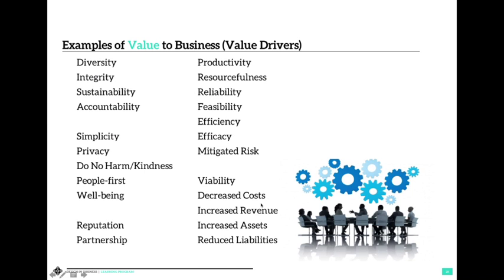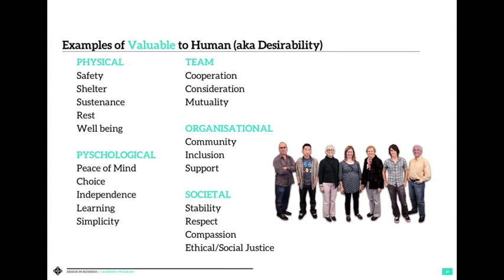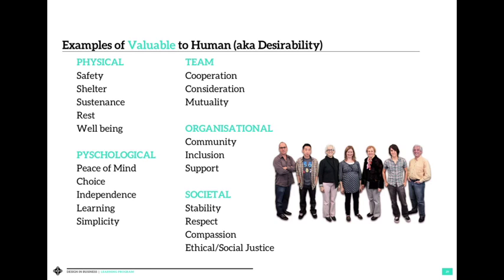I want to touch on the difference between value and valuable. There is a value-to-valuable alignment principle that most organizations should have but sometimes needs to be explicitly stated. Value drivers — how we see value and how it drives decisions — include traditional viability items like productivity, resourcefulness, costs, revenue, and asset utilization. Then there are things valuable to users: safety, security, reliability, peace of mind, happiness, and inclusion. Experience and service design now tries to map these valuable elements to the value-capturing elements of the business, creating alignment between the two.